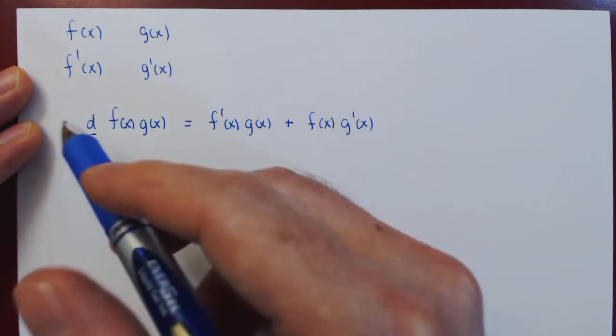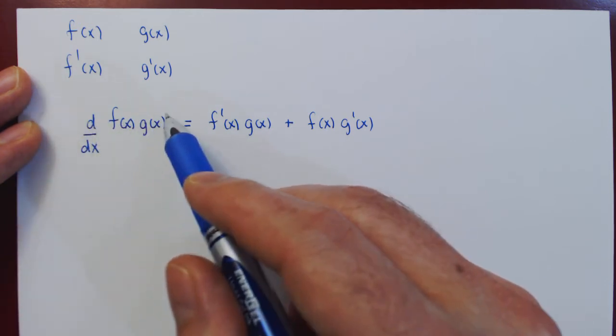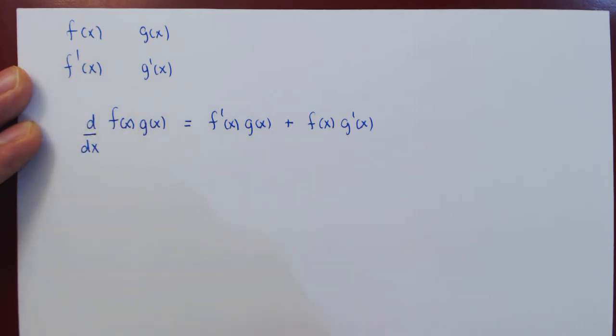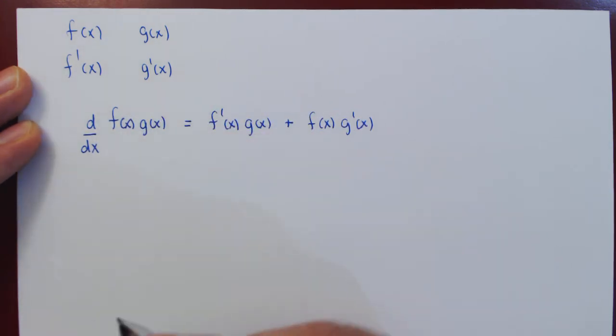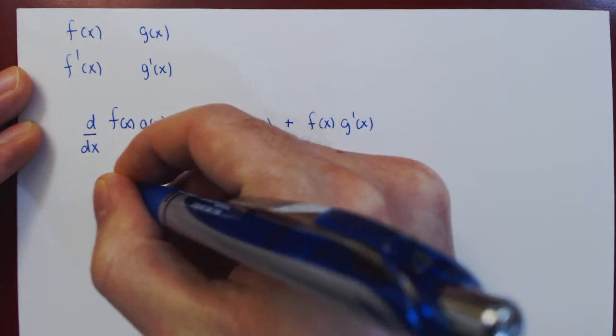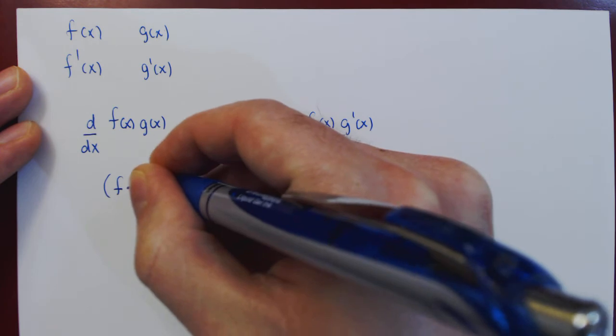And we can write this more concisely using, instead of the d over dx notation for the derivative of the function with respect to x, we can instead use the prime notation, and we'll also drop the x in each case. So we ask, if we multiply f and g, what is their derivative?